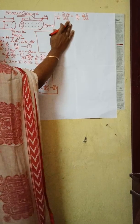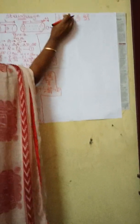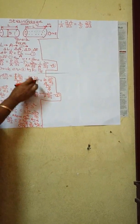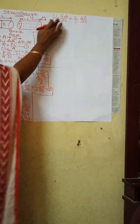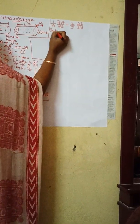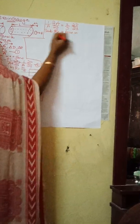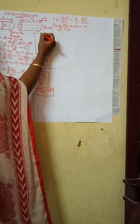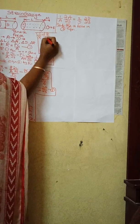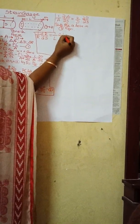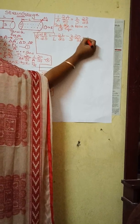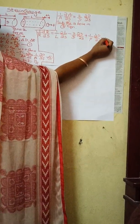Now substitute this result into the third equation. The equation becomes: (1/R)(∂R/∂S) = (1/L)(∂L/∂S) − (2/D)(∂D/∂S) + (1/ρ)(∂ρ/∂S). Let this be your fourth equation.